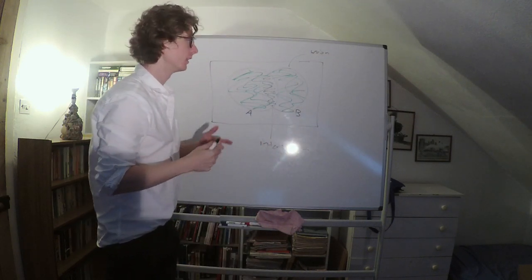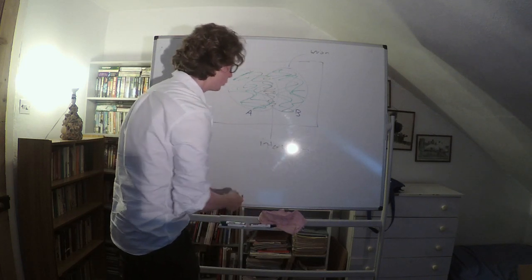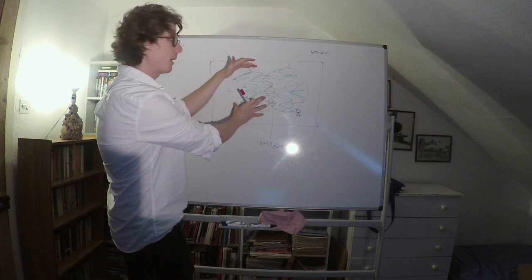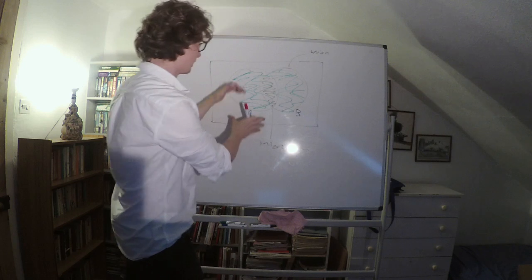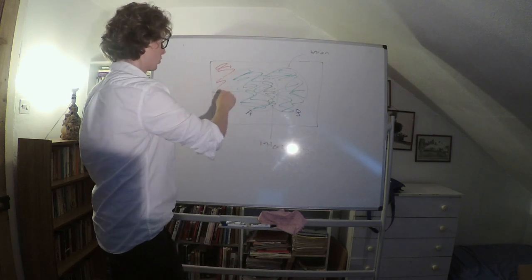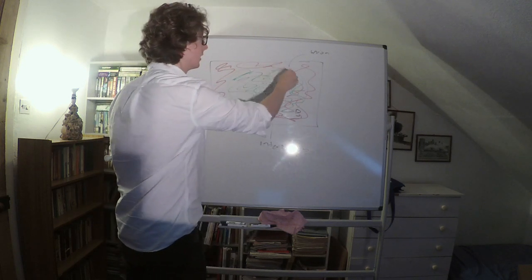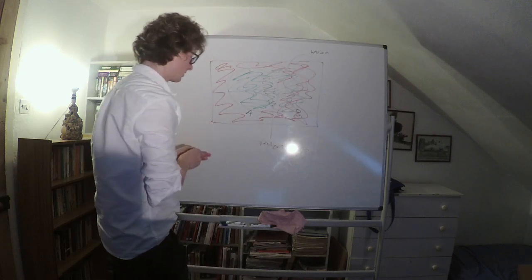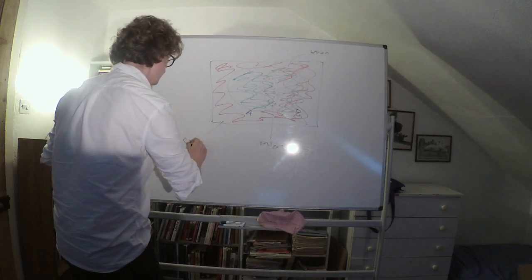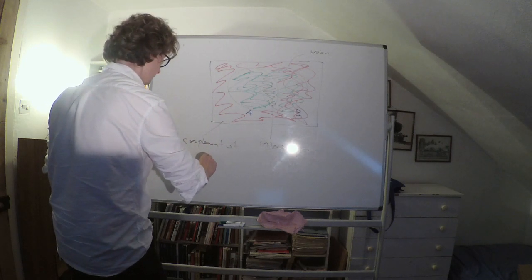Once you've fixed on a particular set like A, you can think about what's called the complement of A, which is just everything outside of A. The red bit is everything outside of A, and notice that it includes some of B. This is the complement of A.